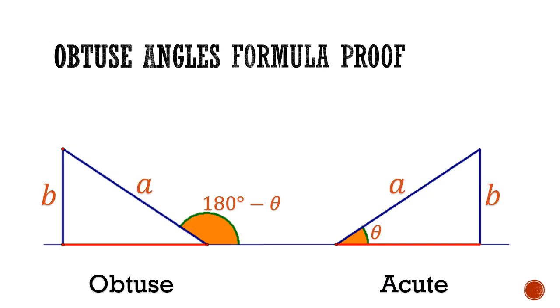but in the acute triangle, the adjacent side is positive C, while the obtuse triangle has a base of negative C.